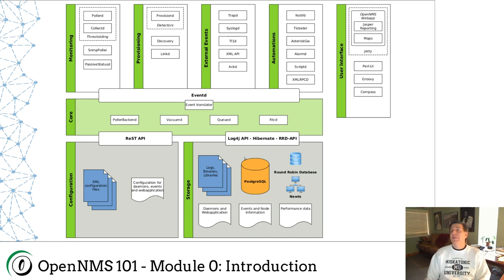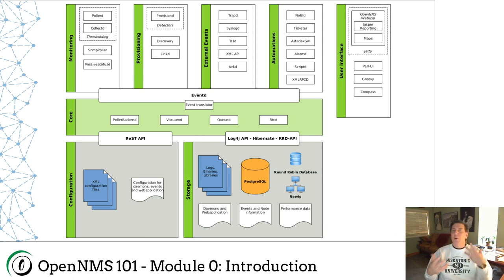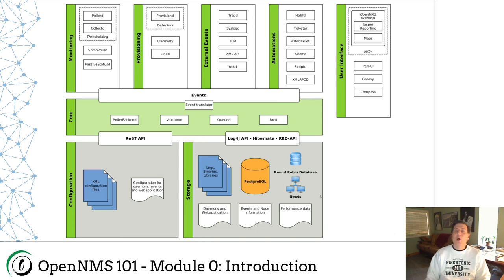OpenNMS stores data in a couple of places. Configuration data is in files stored on the file system. We store a lot of information in a database — currently we're limited to PostgreSQL, though our goal is to make OpenNMS database agnostic. For data storage, we can store in round-robin database format using RRD tool, similar to Cacti. But in situations where that won't scale, we also have a system called Newts. Newts is built upon Apache Cassandra, and it's a new time series database that is incredibly scalable and replicable.